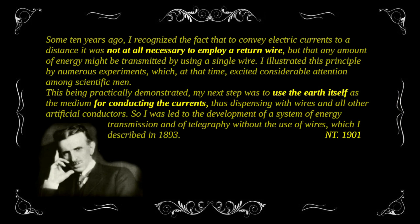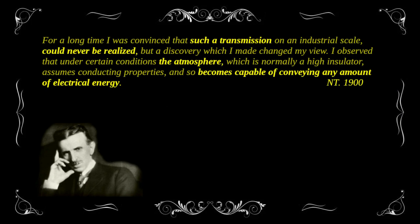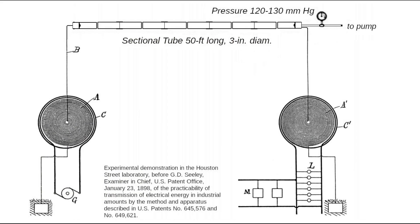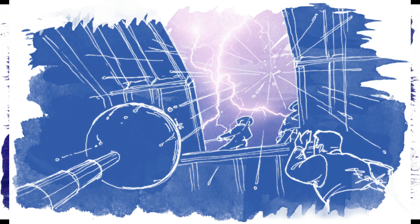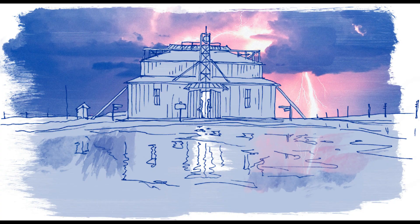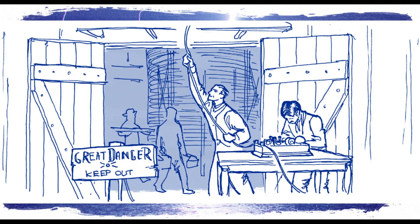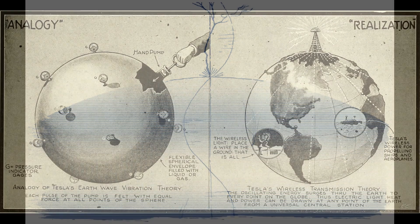It would seem possible to use the earth for this one wire, but this too does not work very well he found. Plan B was to use the ionosphere either as a single wire or together with the earth. Now things were starting to look more promising, but while in Colorado Springs he discovered standing waves in the earth and that provided a far superior option.